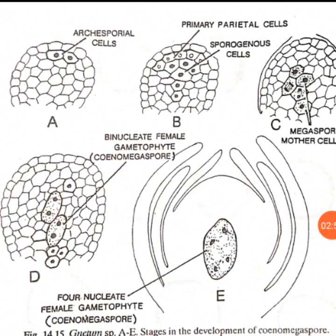Such megaspores develop the female gametophyte. The development of the embryo sac — that is, the female gametophyte — is of the tetrasporic type, because all four nuclei take part in the formation of the female gametophyte.